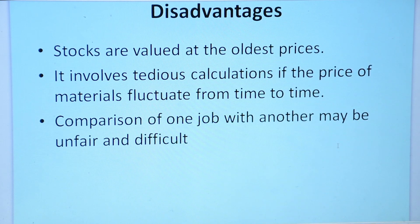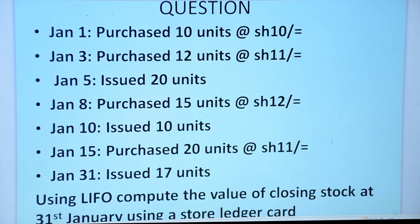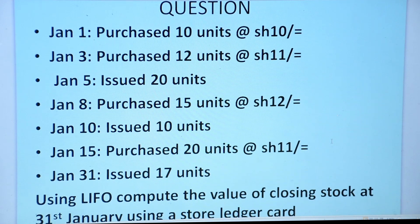One more disadvantage about LIFO is that it is outlawed in most countries, and the international financial reporting standards do not recommend the use of LIFO. To work through a question, we will look at purchases of goods on 1st January, purchases of goods on 3rd January at different prices, issue of goods on 5th, and so on. I would advise you to have a look at the question as we discuss the answer. If you have not followed, you should also check out part 1 which is FIFO, to have a better understanding of how LIFO is done.